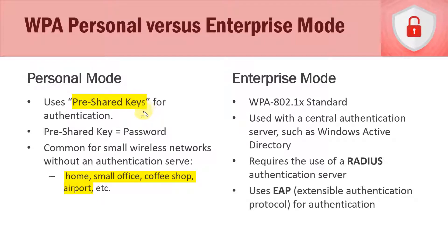For example, let's say I go into Starbucks and there's a sign on the wall that says the name of the wireless network is Starbucks1234 and the password is Starbucks1234. We would connect to that network and enter the password. That's called a pre-shared key — an encryption key that allows people to connect to that wireless network. A pre-shared key really is nothing more than a password, and this is the most common type of wireless network.